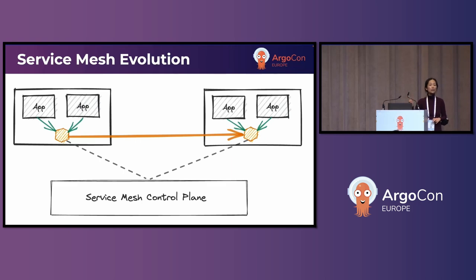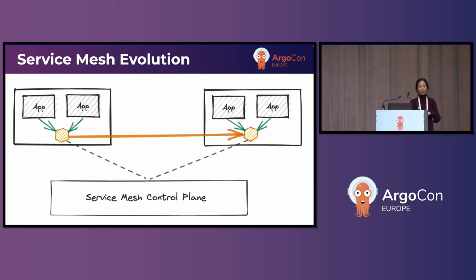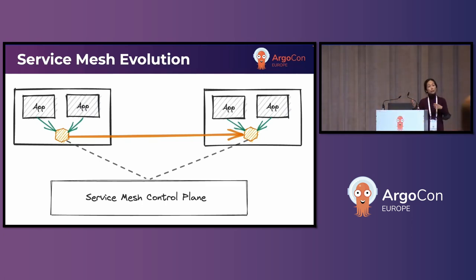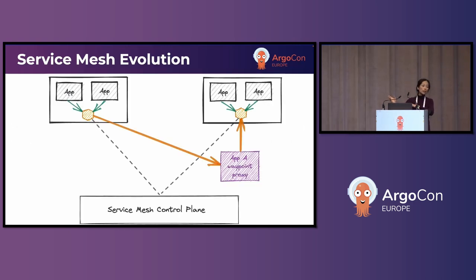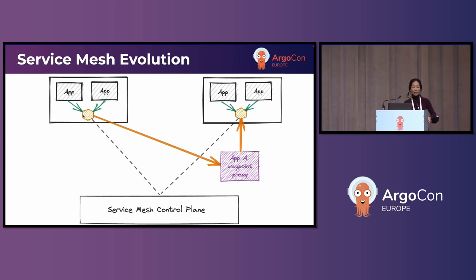How many of you are aware of the new architecture called ambient in the Istio community? Many of you — good. So essentially what we are evolving toward with ambient is: what if you don't need to drag that sidecar along with your application? What if you just need layer 4 functionality? We would provide a per-node proxy that implements layer 4 functionality such as layer 4 authorization policy and layer 4 traffic management. We're also splitting layer 4 and layer 7 into different architecture components — layer 4 is implemented by the per-node proxy, which is the orange element here, called the Zero Trust Tunnel, and layer 7 is implemented by the Waypoint proxy, continuing to use our favorite proxy, Envoy.